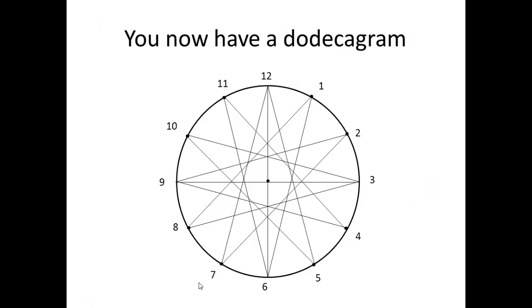So now you're done. You have a dodecagram. This is called a 12-pointed star. And I hope your lines are very light like mine.